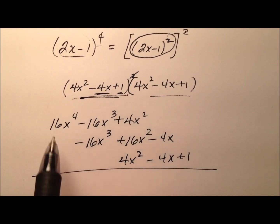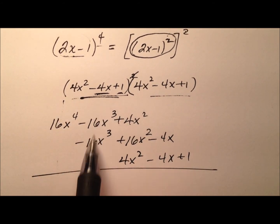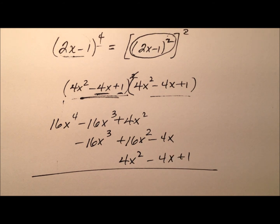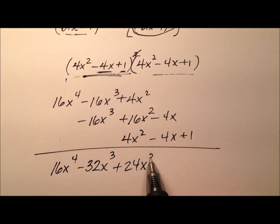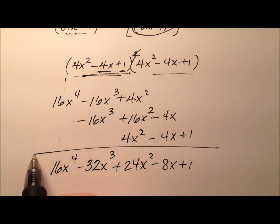So from here on out, it's just the process. We have all of our like terms aligned vertically in columns, let's go ahead and put all our like terms together now, so right there, and plus 24x squared minus 8x plus 1.